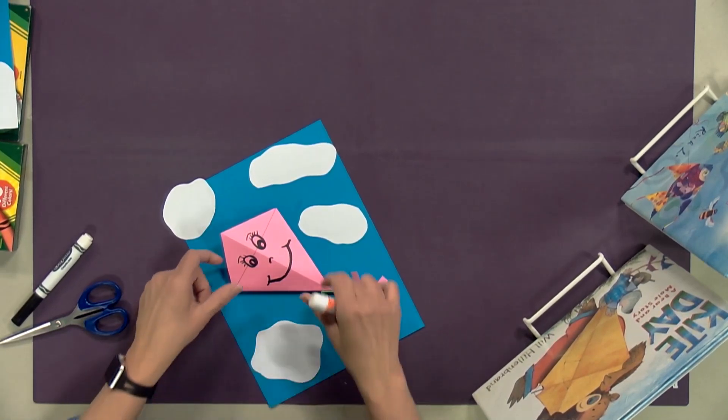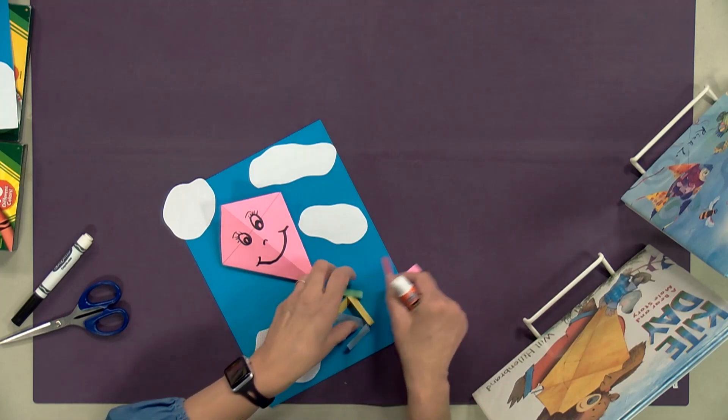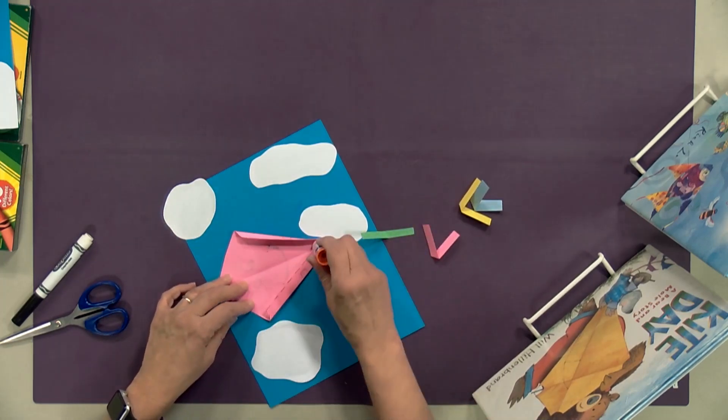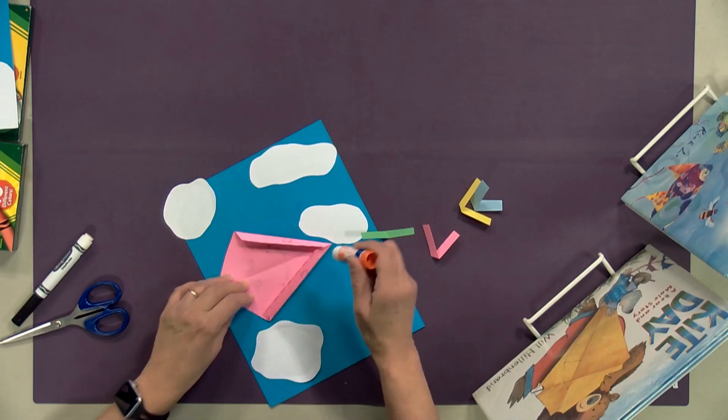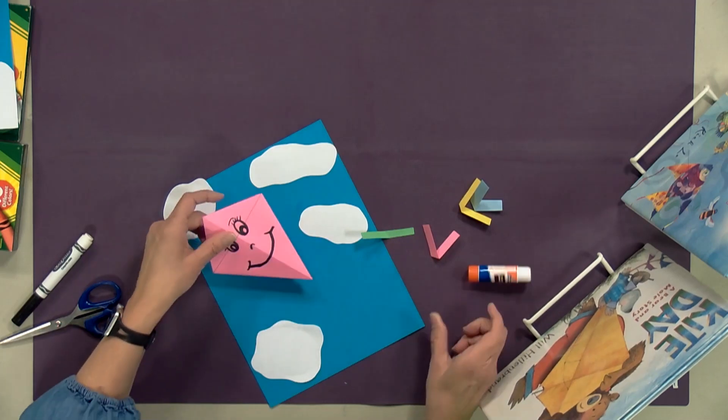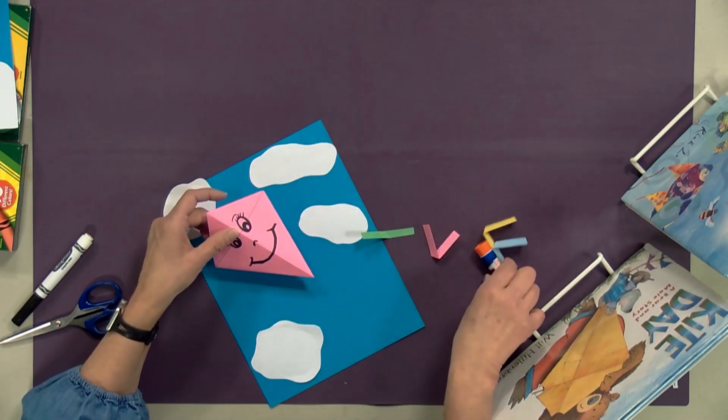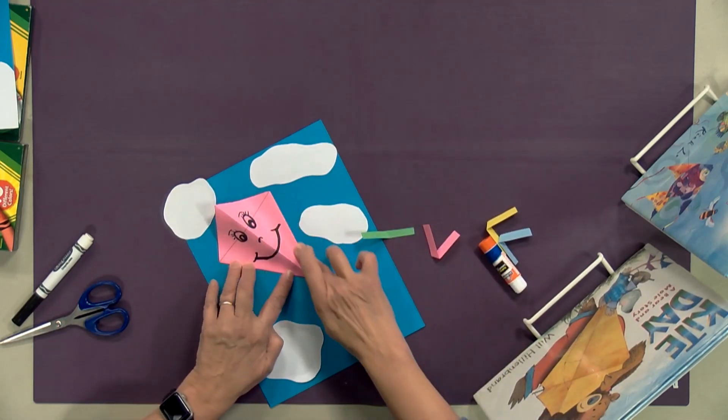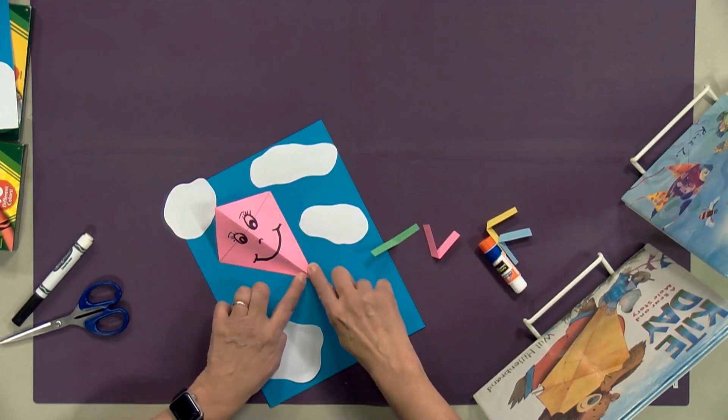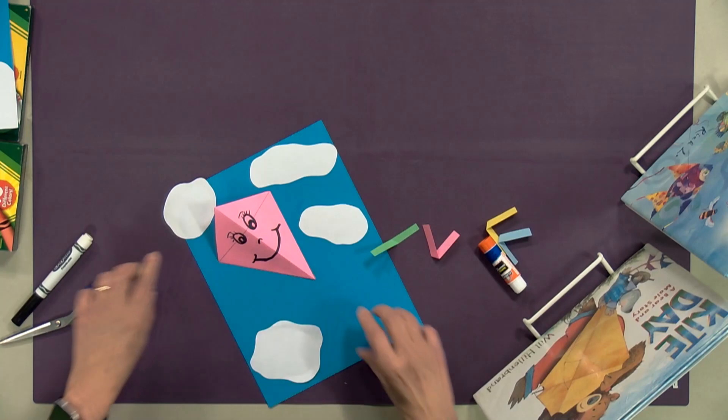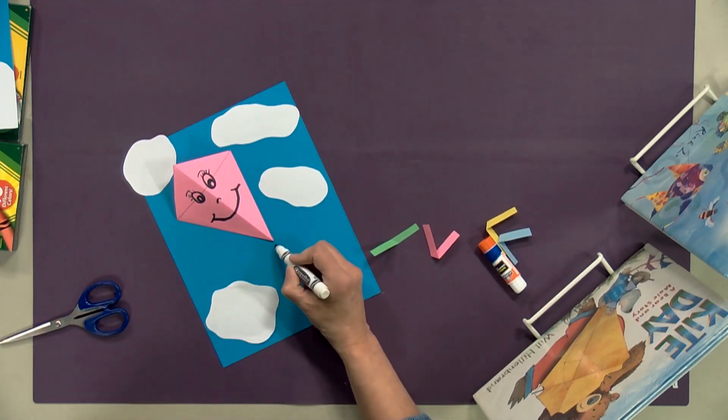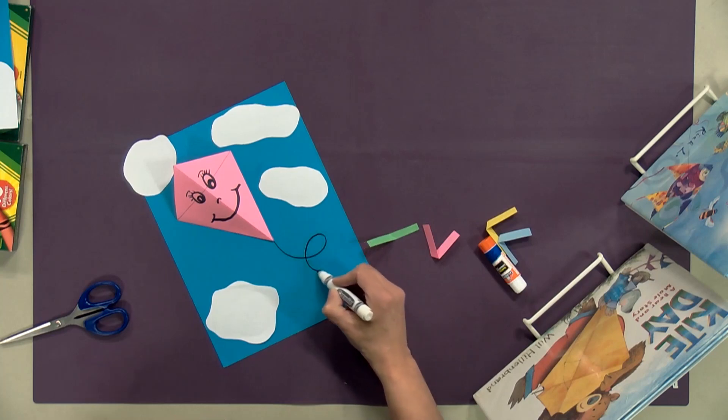Now we can place our kite. For the glue, you're only going to want to glue on these tabs. If you have white glue that would work, but the glue stick works just as well. I'm going to sort of fold that up and stick that down, press just those tabs so he's coming right off the paper. Then we're going to want to draw the string, so just make it a loop-de-loop.